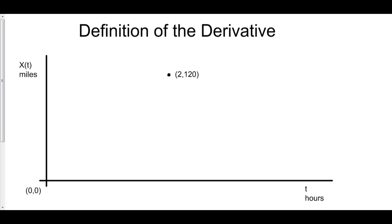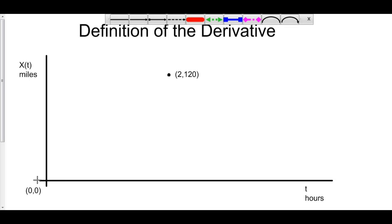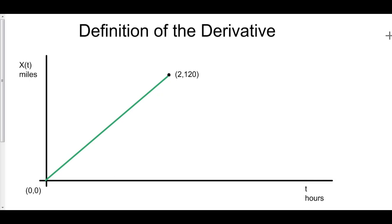I'm going to drive a car along a straight line, and over two hours, I am now at position 120 miles. Here's my t-axis and here's my x-axis, which is the position. I start off at time 0, position 0. After two hours, I am now at position 120. I can find my average rate of change by finding the slope of the line between these two points.